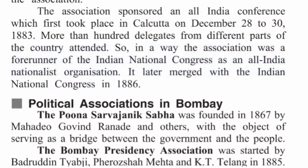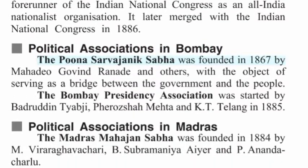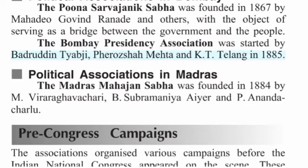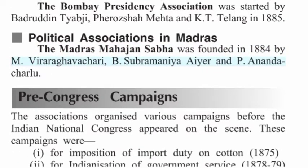Political Associations in Bombay: The Poona Sarvajanik Sabha was founded in 1867 by Mahadeo Govind Ranade and others, with the object of serving as a bridge between the government and the people. The Bombay Presidency Association was started by Badruddin Tyabji, Pherozeshah Mehta and K.T. Telang in 1885. Political Associations in Madras: The Madras Mahajan Sabha was founded in 1884 by M. Veeraraghavachariar, B. Subramanya Iyer and P. Ananda Charlu.